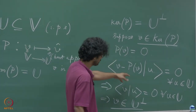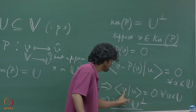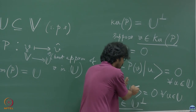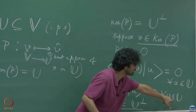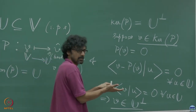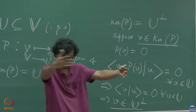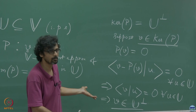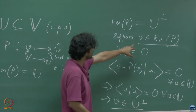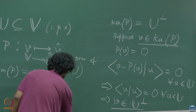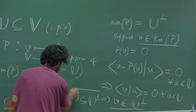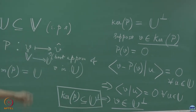So starting with the assumption that V belongs to the kernel of P, we observe it implies V belongs to the orthogonal complement of U. This shows the kernel of P is contained inside the orthogonal complement of U. But we need to show equality, so we must show the other direction as well.